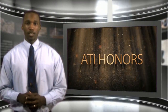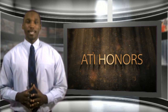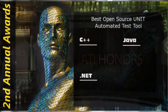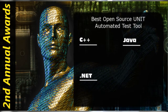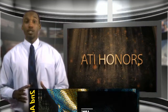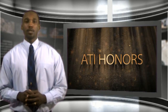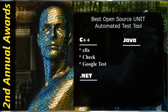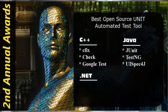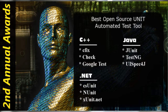For this category, we have three technology-specific subcategories: the Best Open Source Unit Automated Test Tool for C++, for Java, and for .NET technology. The nominees for the C++ category are C-Fix, who was a runner-up in this category last year, Check, and Google C++ Testing Framework, also known as Google Test. The nominees for the Java category are JUnit, who was last year's winner, TestNG, and UISpec for J. And the nominees for the .NET category are CSUnit, NUnit, and XUnit.net.